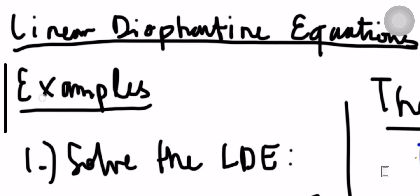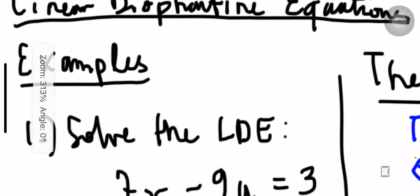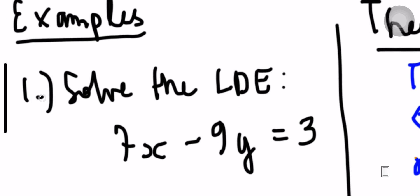Hi everyone. We will have another video in number theory, and this is one additional video for linear differential equations. There are a lot of comments asking me to do more examples, so let's do more. This will be a particular solution. For example, how do we solve the LDE — that's the linear differential equation — given in this form: 7x minus 9y equals 3.